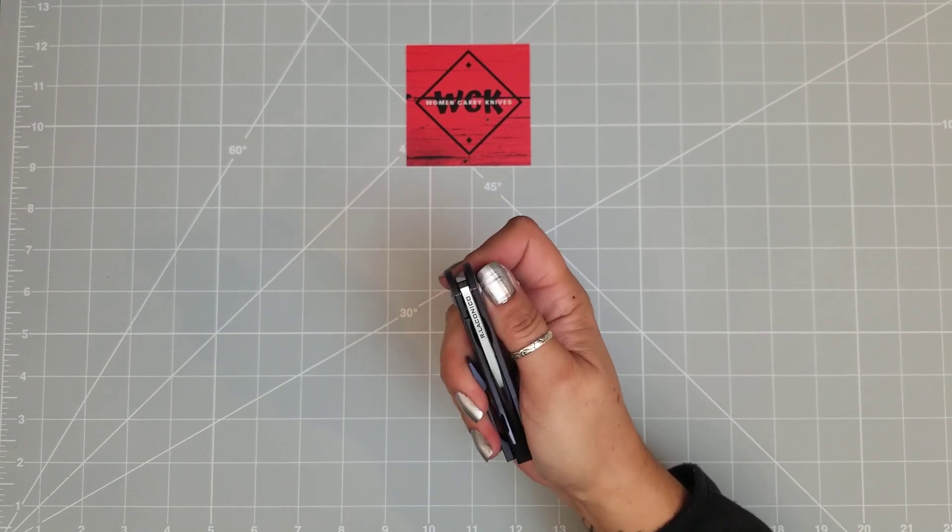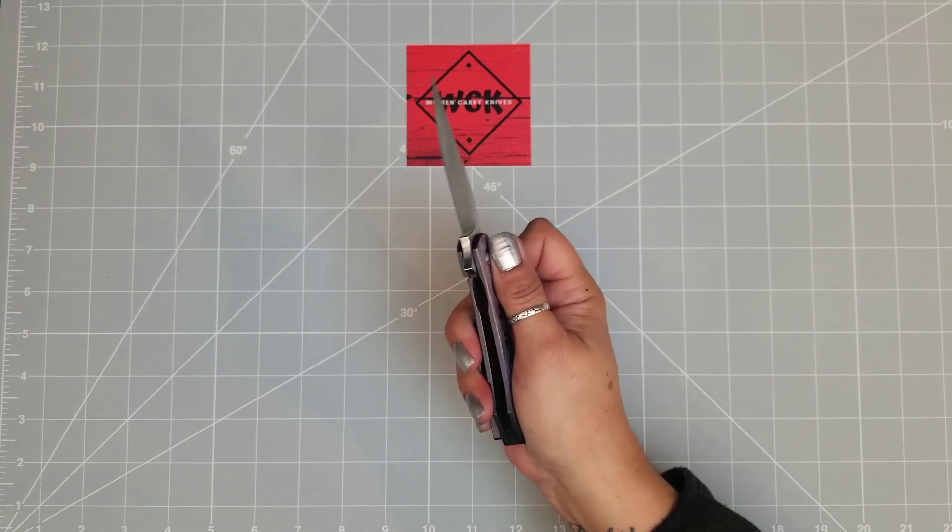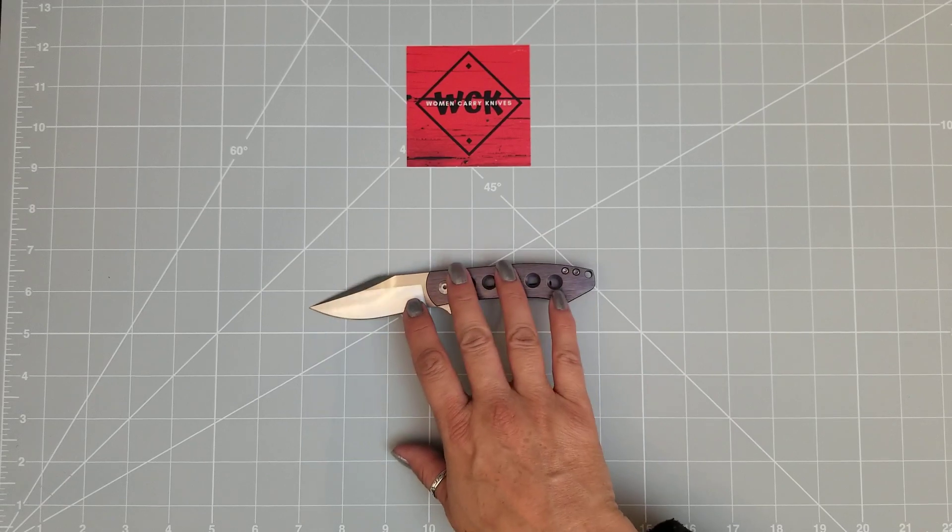They have a couple others. I know the Sprocket, and I believe the Sprocket is out, which is almost like a larger version of this, kind of in my opinion. So same, you know, the holes in the handle, kind of the same concept.